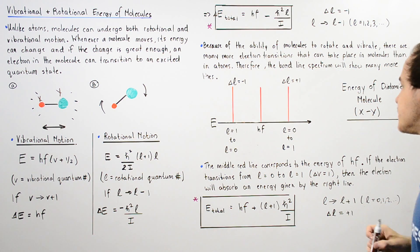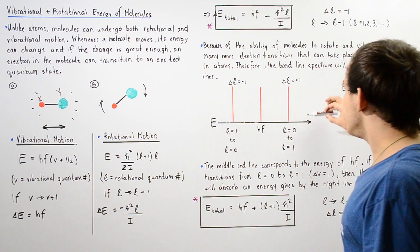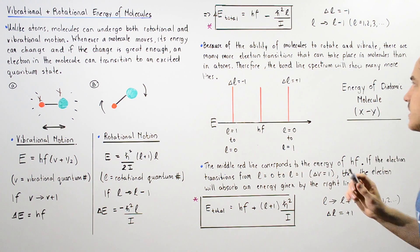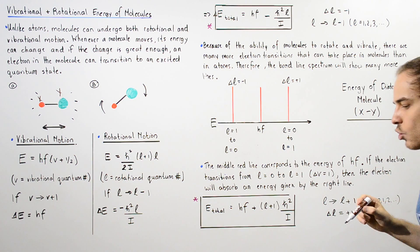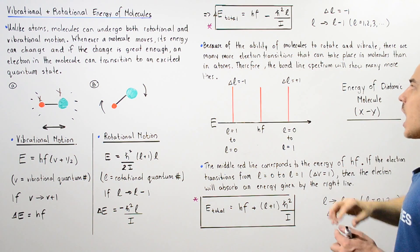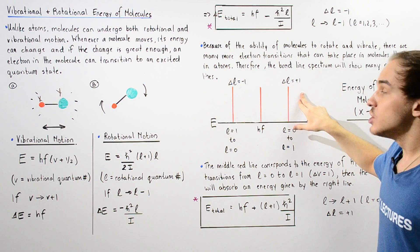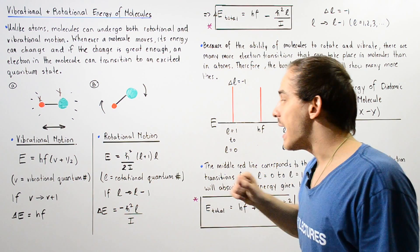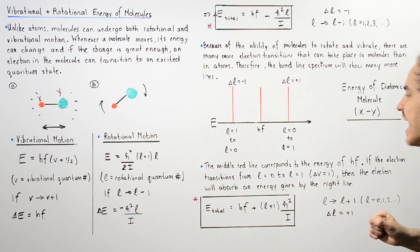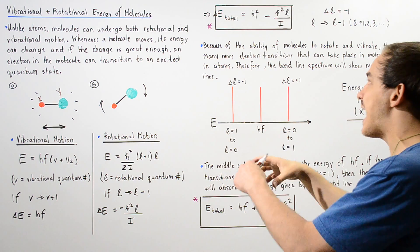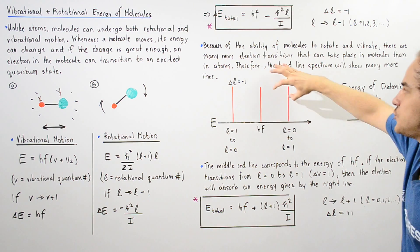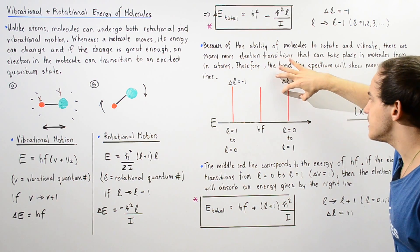Now the middle line, the middle red line, corresponds to the energy of H multiplied by F. Now what exactly is our right line? So the third line from this side. So this basically corresponds to a delta L of positive one. So that means if the L transitions, not from L to L minus one, but from L to L plus one, then our molecule and electron will gain a certain amount of energy and it will jump from this state to this state.